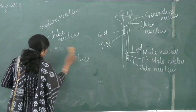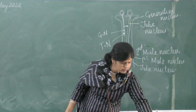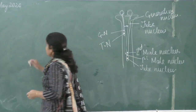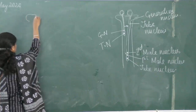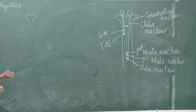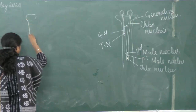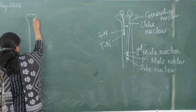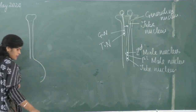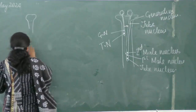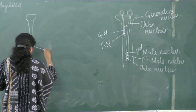The female part has a stigma — it varies, it can be disc-like, round, or bulb-like. This is the style, and this goes into the ovary.